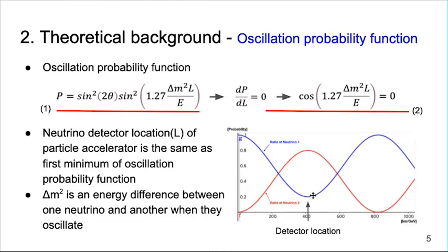The graph in the bottom right is the neutrino oscillation probability function. The red plot represents equation number one and the blue plot is equation number one subtracted from one. These two plots show neutrino oscillation. In this graph, the position with the first maximum oscillation rate is the neutrino detector's location. The detector's location can also be obtained from the value of L when equation number two equals zero.